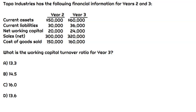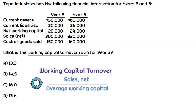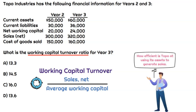The question gives us some financial information for Topa Industries for years two and three. Ultimately, we need to figure out what the working capital turnover ratio is for year three. When we think about the working capital turnover ratio, we're trying to understand how efficiently or effectively a company is at using its assets for the business.